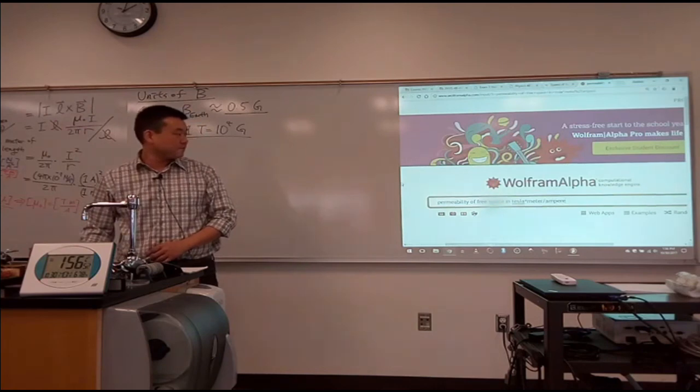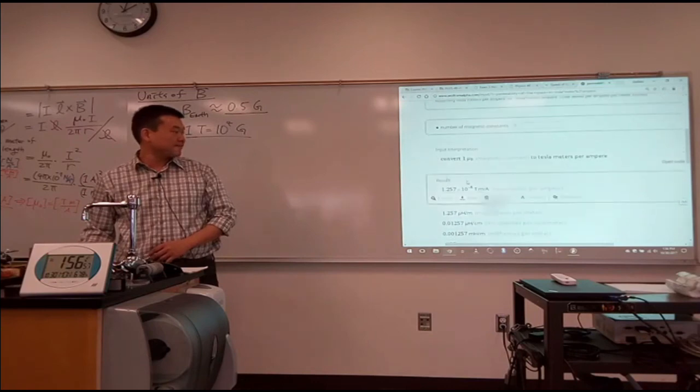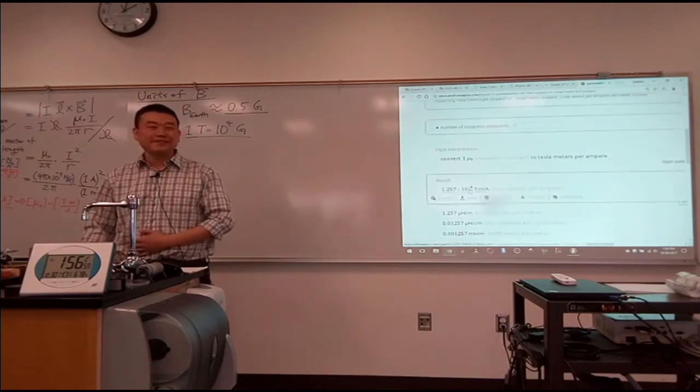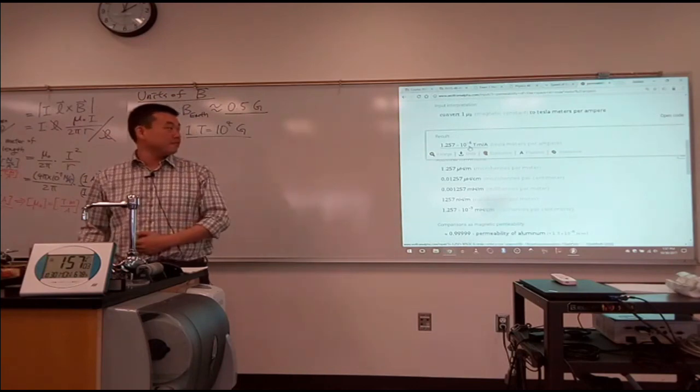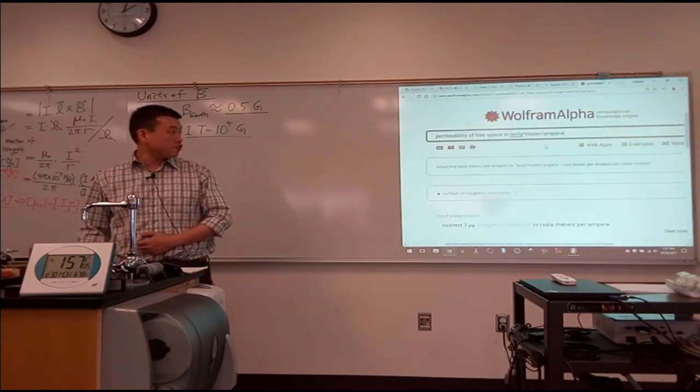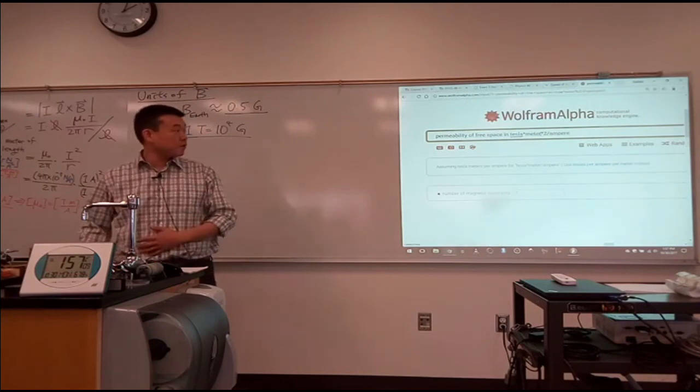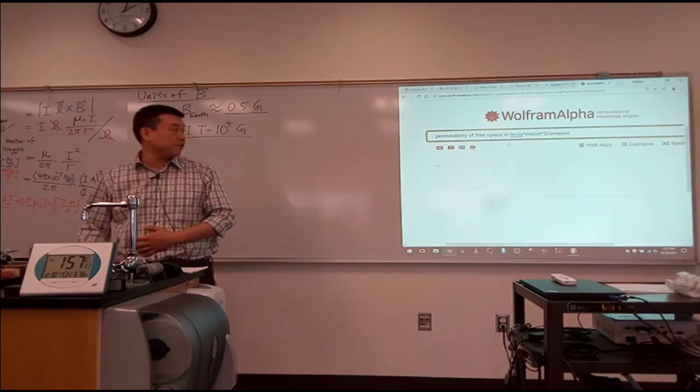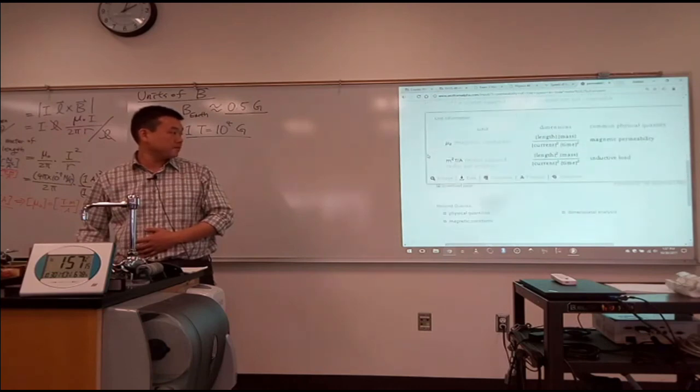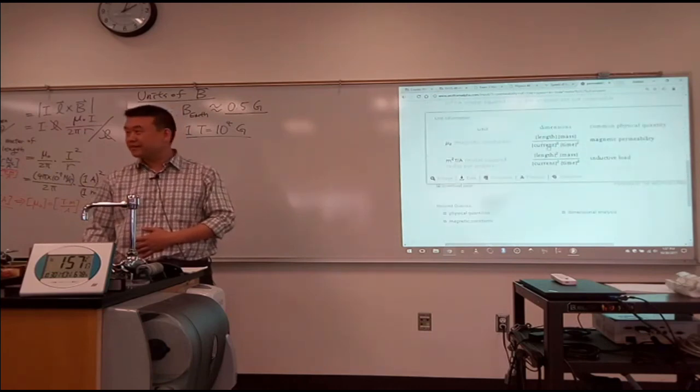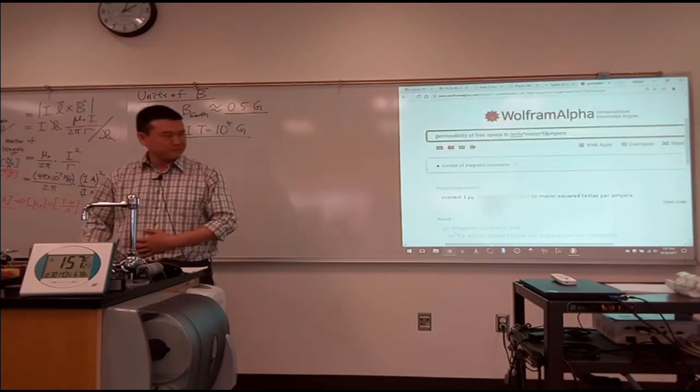Permeability for space in Tesla times meter per ampere. And it'll actually, Tesla meter, okay, there it is. I have to force it to give it to me, but it does when I ask for that unit explicitly. When you give it wrong units, it actually wouldn't give you an answer. If I say Tesla meter squared per ampere, which is not a valid unit for permeability, it doesn't actually do that. It tells me, oh, these are the actual units. What are you talking about? So, good. Any questions?